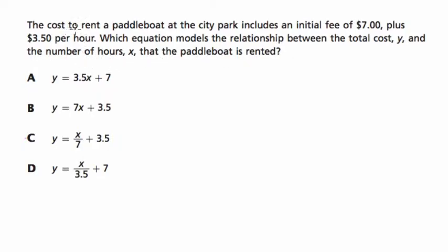Let's start by reading the problem together. It says that the cost to rent a paddle boat at the city park includes an initial fee of $7. So I'm going to start modeling this right away. This is for P, for paddle boats. Start at $7, then they add $3.50 per hour.